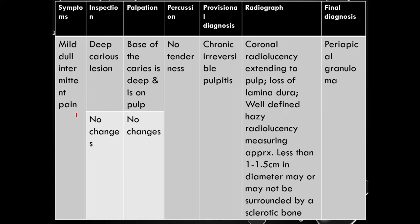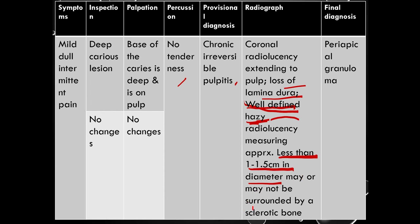Next: the patient may report with mild dull intermittent pain. On inspection, deep caries lesion with no soft tissue changes. On palpation, base of the caries is deep and on the pulp, no changes on palpation. On percussion, no tenderness. Provisional diagnosis is chronic irreversible pulpitis. But on radiograph, you can see loss of lamina dura and a well-defined hazy radiolucency measuring approximately less than 1 to 1.5 cm in diameter, may or may not be surrounded by sclerotic bone. Based on the radiographic finding, the diagnosis is periapical granuloma.